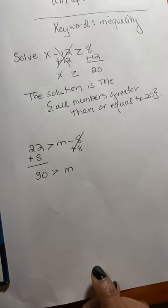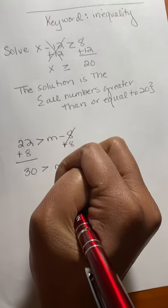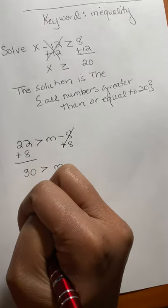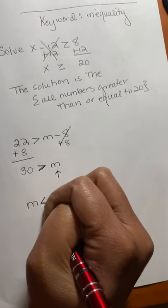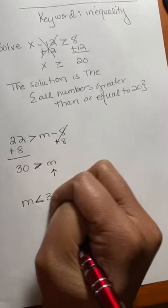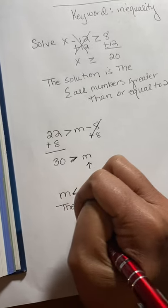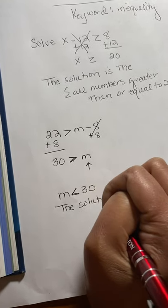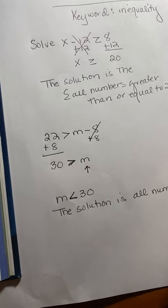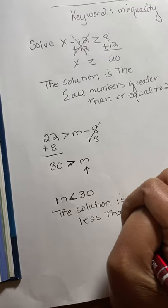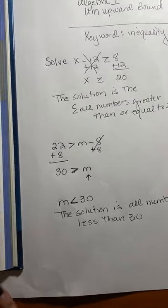This yields 22 plus 8 is 30. Bring down the greater than sign. But notice where the M is located. Notice where the variable is located. So if you were reading this, you would read it from your variable. So this would be M. Now look where the alligator mouth is pointing. We're going to make sure it points the same direction. So M is less than 30. So that solution is all numbers less than 30. I think y'all could have got that. Let's try another one.